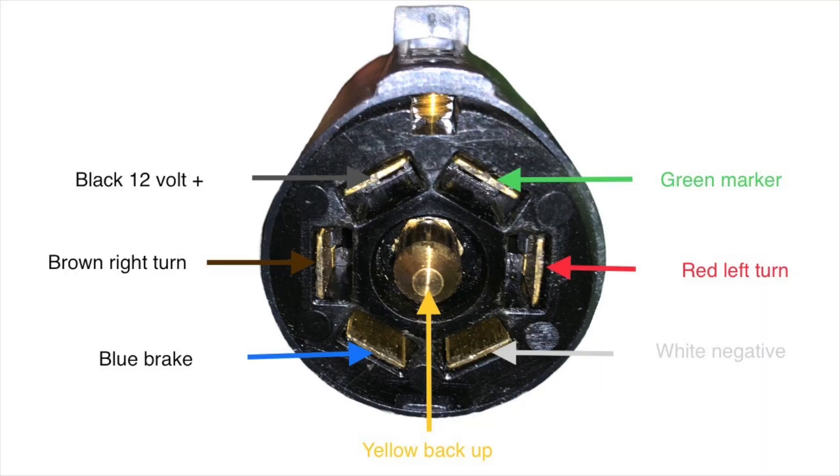This is a little diagram describing the color code for the flat seven-way on your typical travel trailer. Black is your 12 volt positive, brown's your right turn, blue is your brake, white is your negative, red is your left turn, green is your marker lights, and yellow, if you have it, would be your reverse lights.